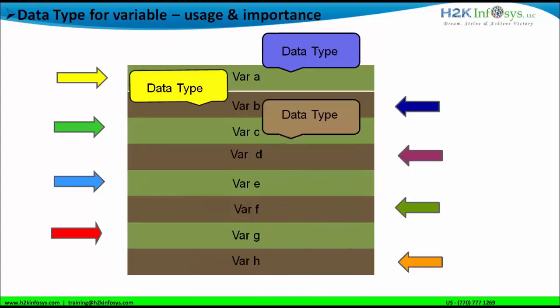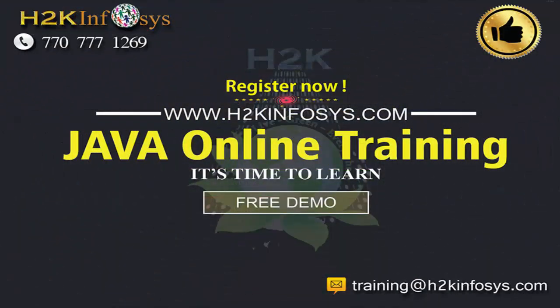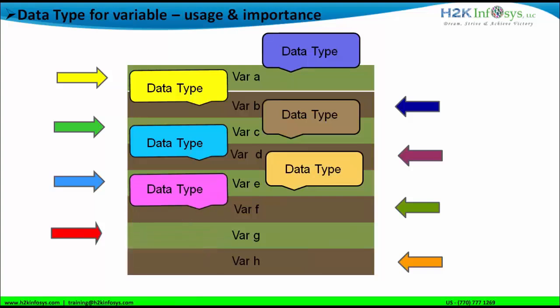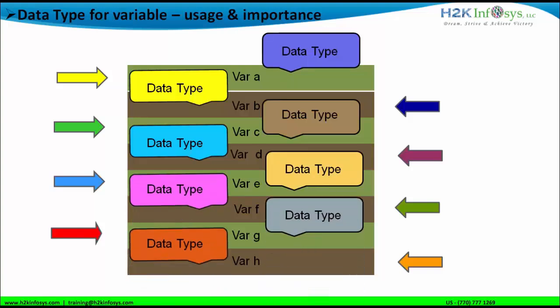For variable C, we have to define the data type — what kind of data variable C can hold. When we declare a variable, it is important that we also declare the data type for it. For variable D, which symbolizes the address of the fourth memory slot in this diagram, I have to define the data type when I declare it. The same situation applies to variable E, F, G, and H.